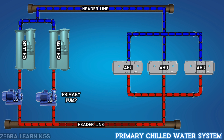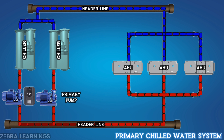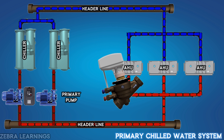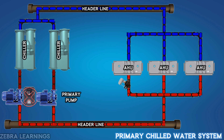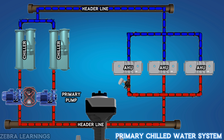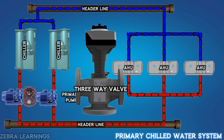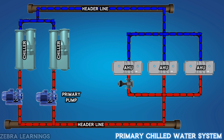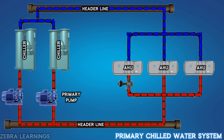In this system, if we use a VFD on the primary pump, we will use a two-way valve at the AHU. If we do not use a VFD, we will use a three-way valve at the AHU. This is the working principle of a primary chilled water system.